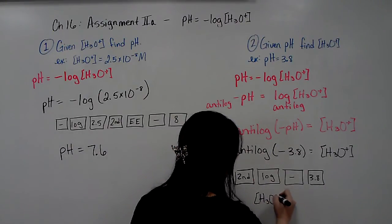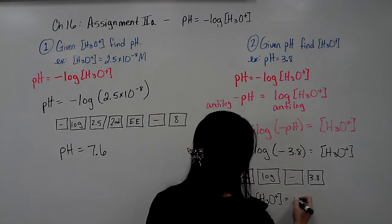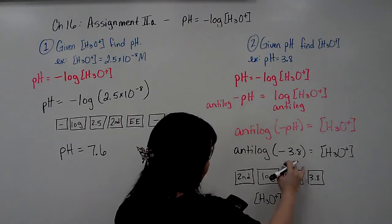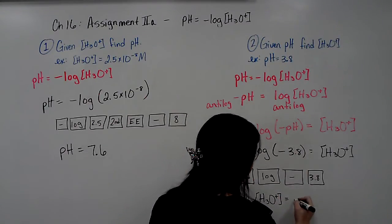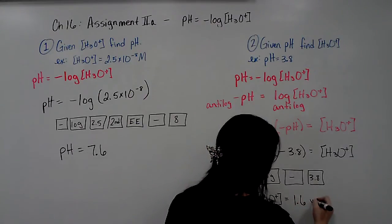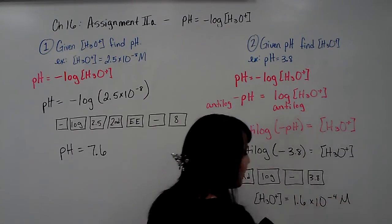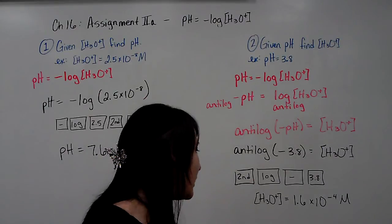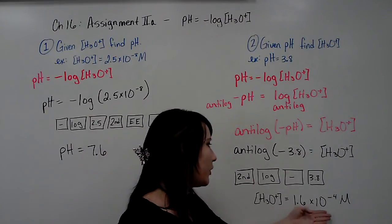your hydronium ion concentration is, and we have two sig figs here, so I'm going to keep two sig figs in my answer: 1.6 times 10 to the negative 4. And molar, molarity, is your unit. So don't forget to put your unit for molarity.